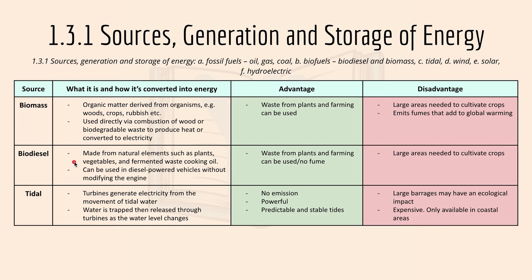Biodiesel is made from natural elements such as plants, vegetables, and fermented waste cooking oil, and can be used in diesel-powered vehicles without modifying the engine. The advantage is that waste from plants and farming can be used. The disadvantage is that large areas are needed to cultivate crops. Tidal energy uses turbines to generate electricity from the movement of tidal water — water is trapped then released through turbines as the water level changes. Advantages are no emissions, it's powerful and predictable.